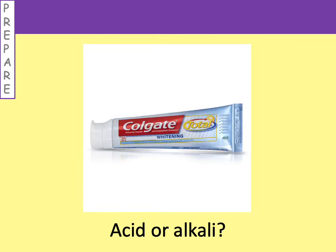Now in comparison to vinegar, we've got toothpaste. Think about what we use toothpaste for — we use it to protect and clean our teeth. Thinking about what we've just learned about vinegar being acidic, what do we think toothpaste might be? Those of you that said alkali, you are correct. Toothpaste is an alkali.